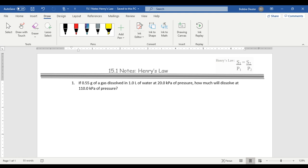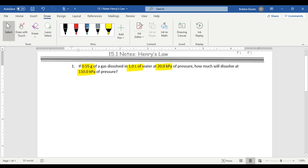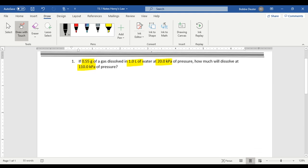So let's start looking at what we have here. So it says that if we have 0.55 grams of dissolved gas in one liter of water at 20 kPa of pressure, how much will dissolve in 100 kPa of pressure? So let's start looking at this law right here.